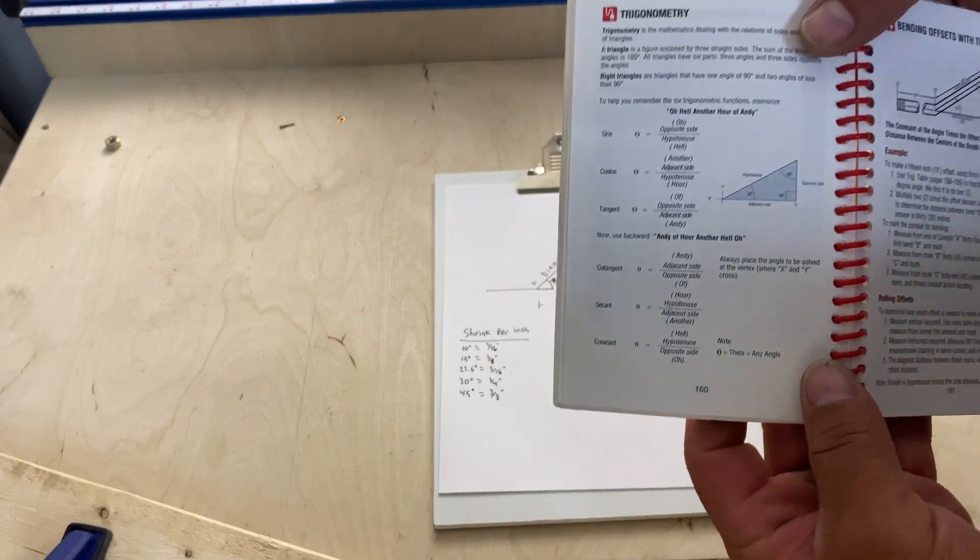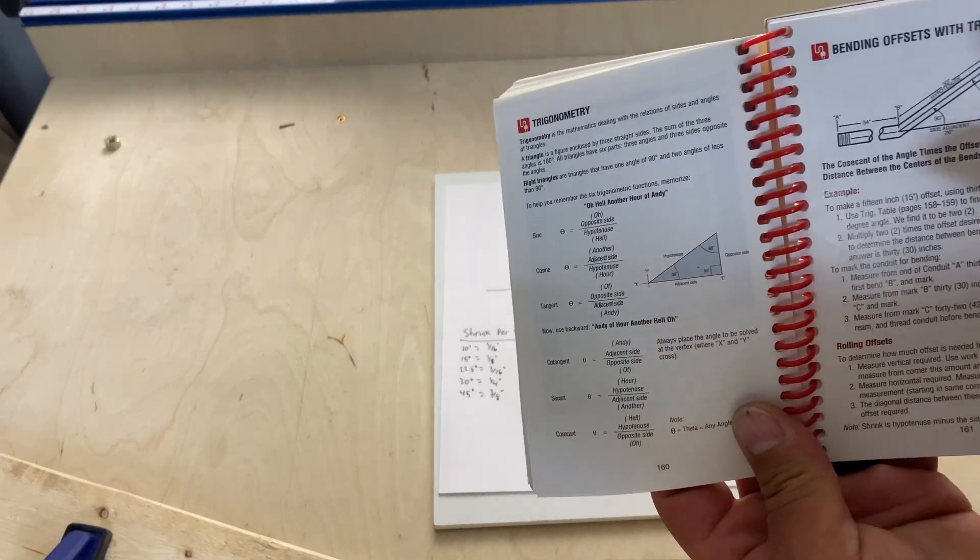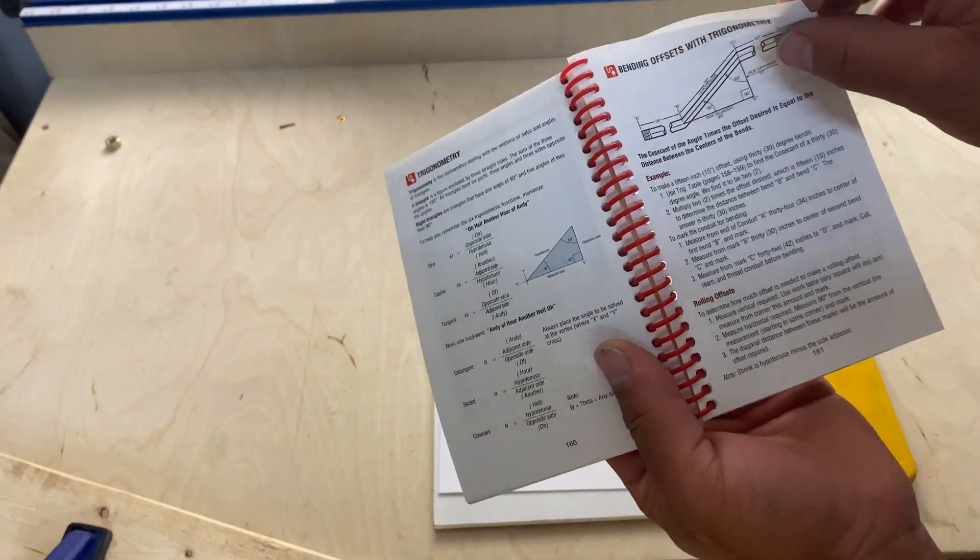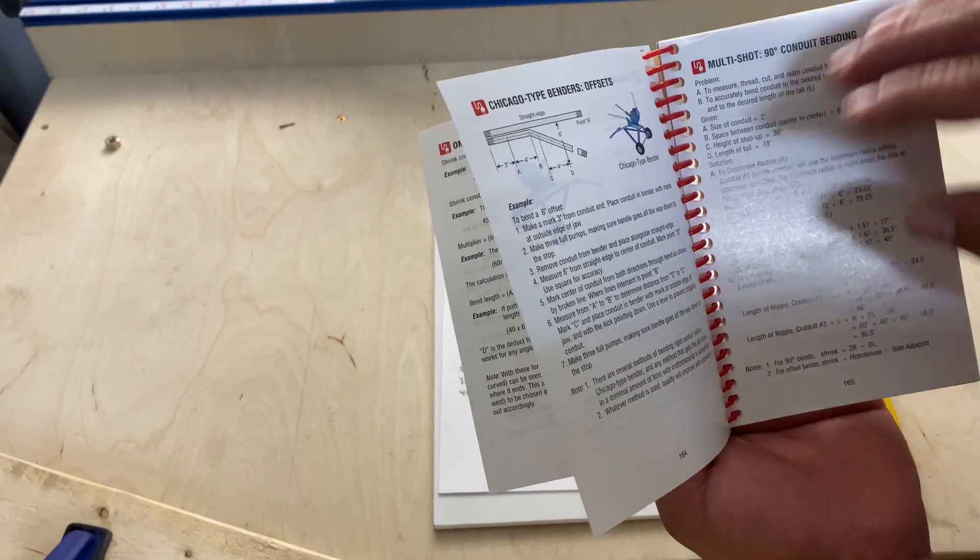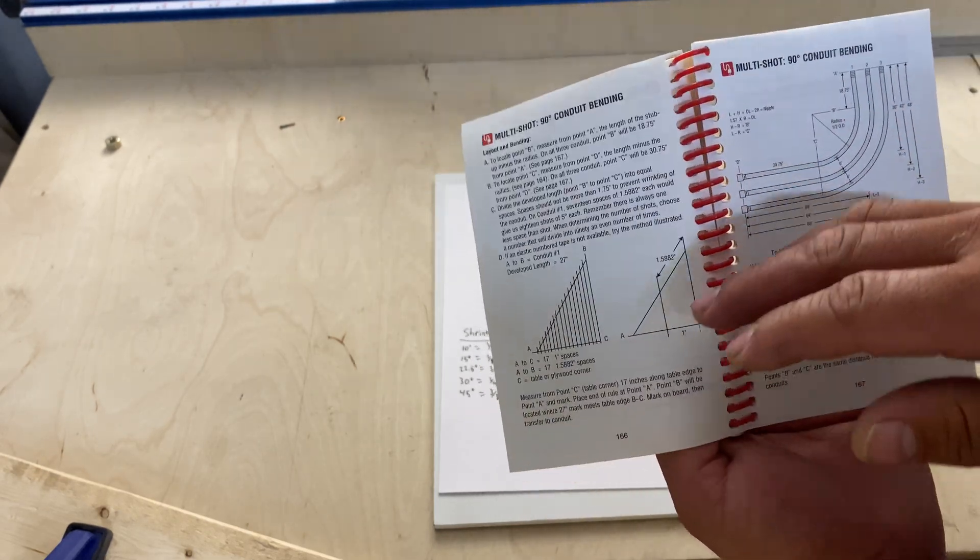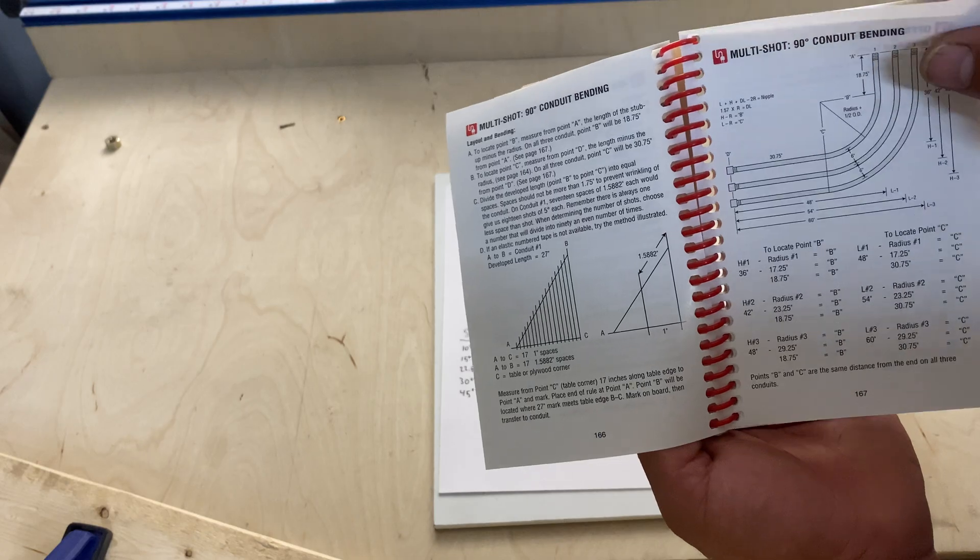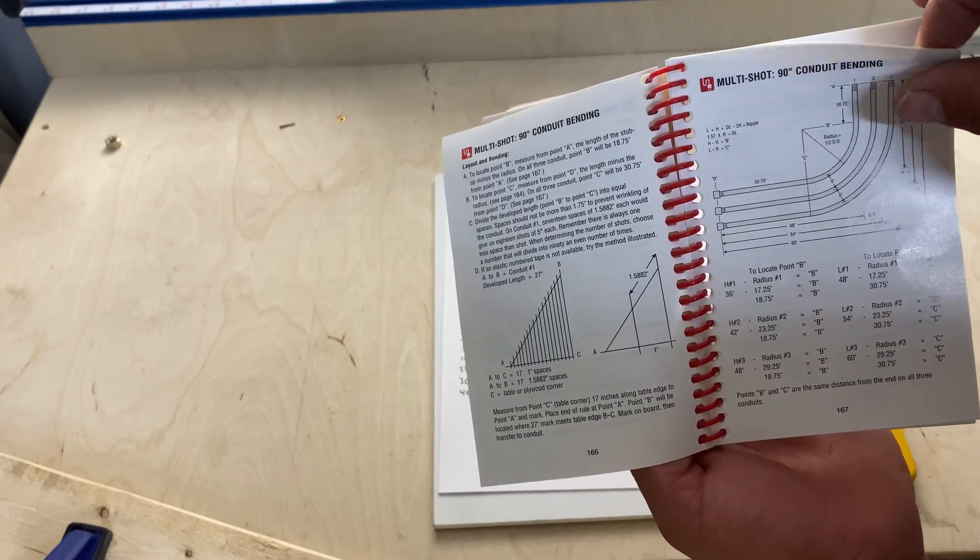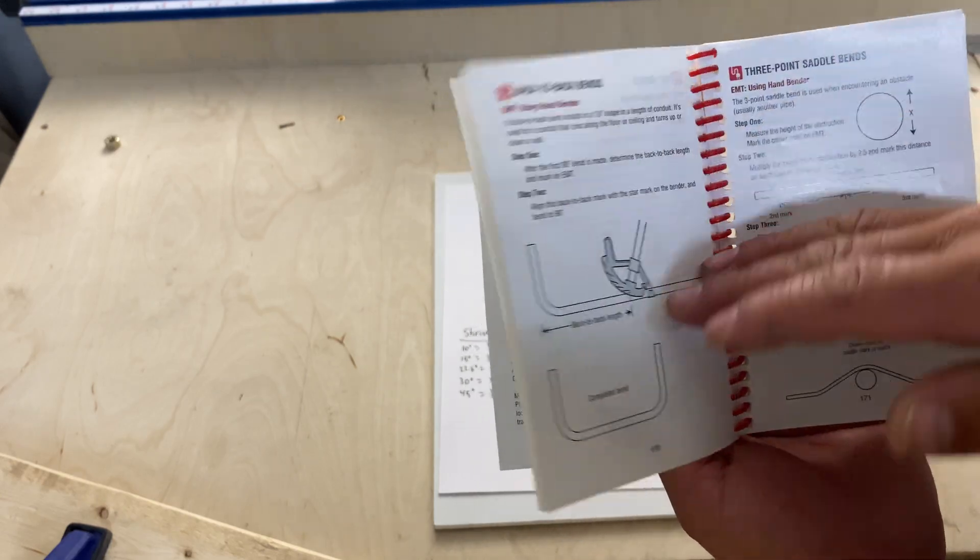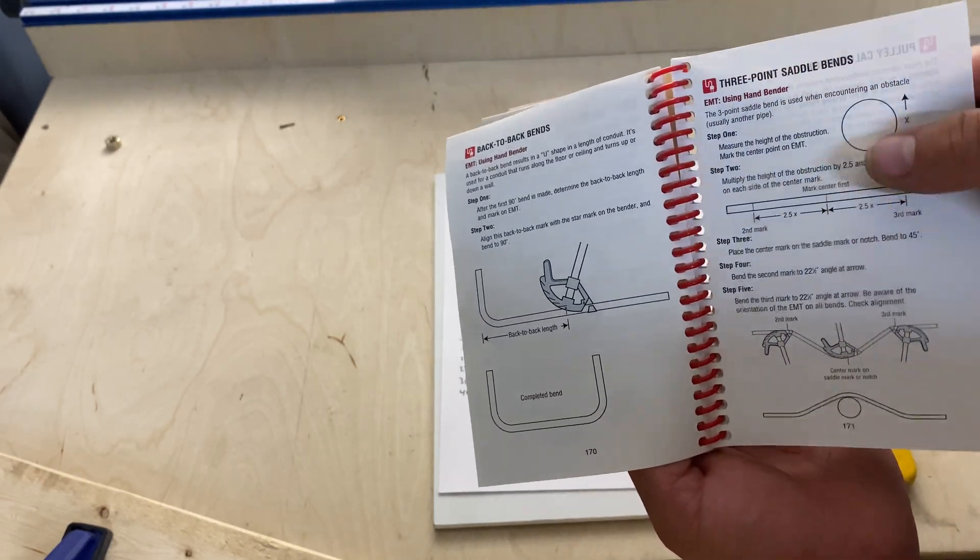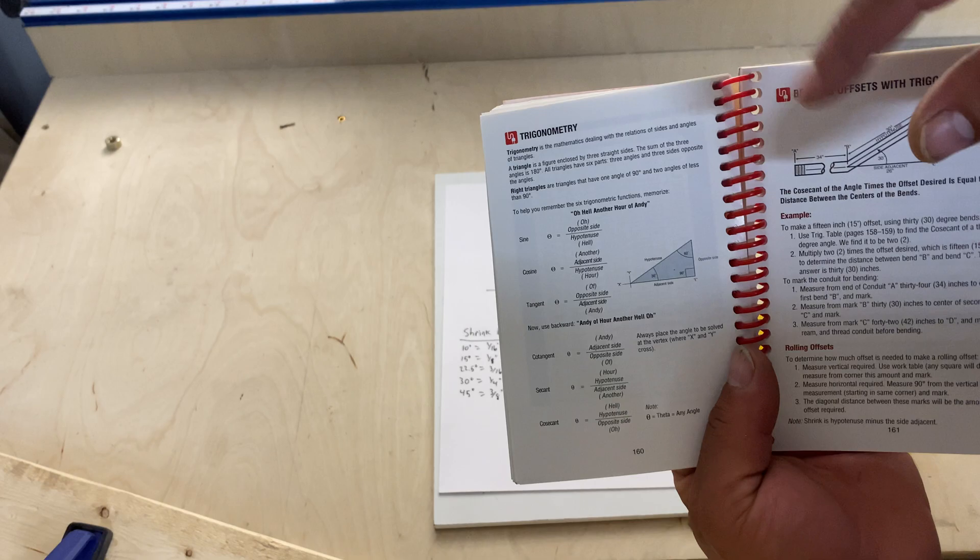If you turn to page 160, it gives you your trig formulas and step-by-step instructions on how to bend. It shows you how to use your benders, the Chicago style, how to make your 90s, your repeated 90s or multi-shots, how to use your foot benders and three-point saddles. It's got a lot of information.